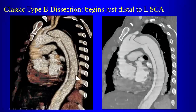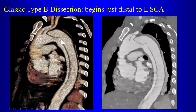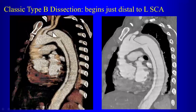In a classic type B dissection, the flap starts just distal to the left subclavian artery. Even if the entry tear is located more distally, the dissection propagates both forward and backward, but proximal propagation typically stops at the takeoff of the left subclavian artery — that's the classic appearance of a type B dissection.